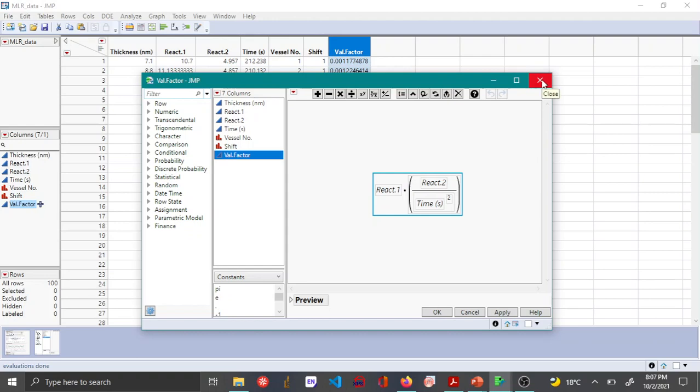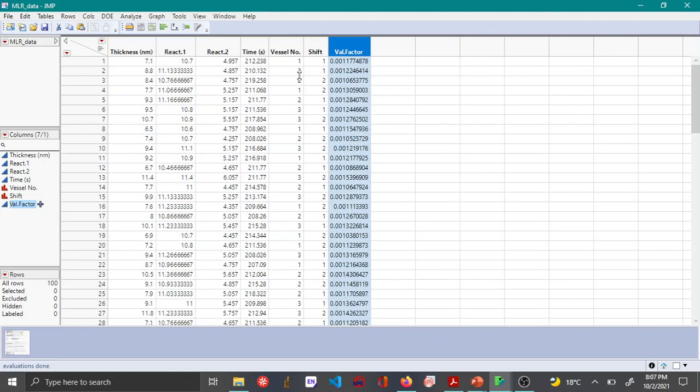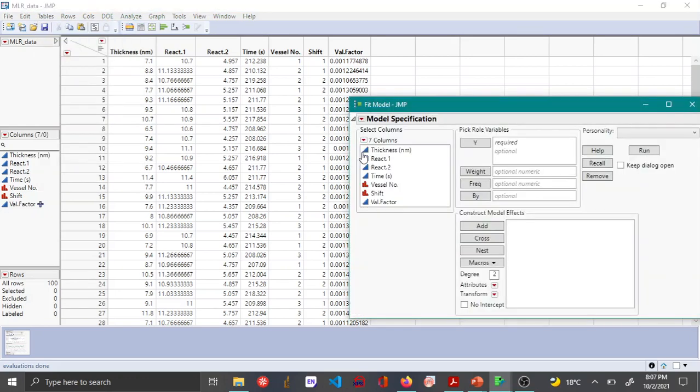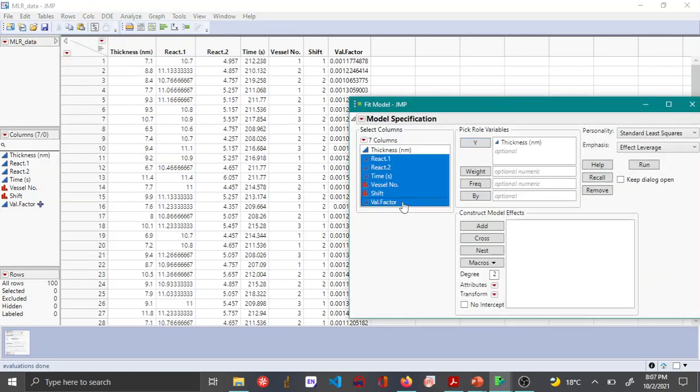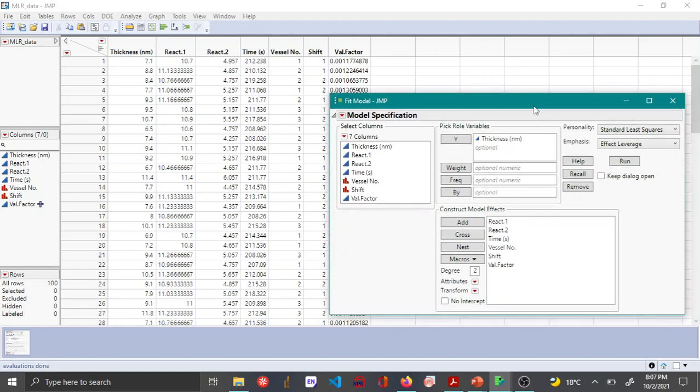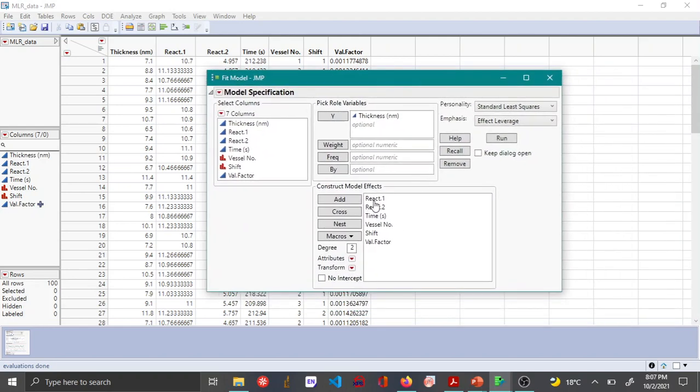So let's do the multiple linear regression fit and let's take a look at the VIF values. I'm opening fit model, adding thickness as the Y response and adding all the variables as my construct model effects. And here I'm not considering any interactions at the moment.